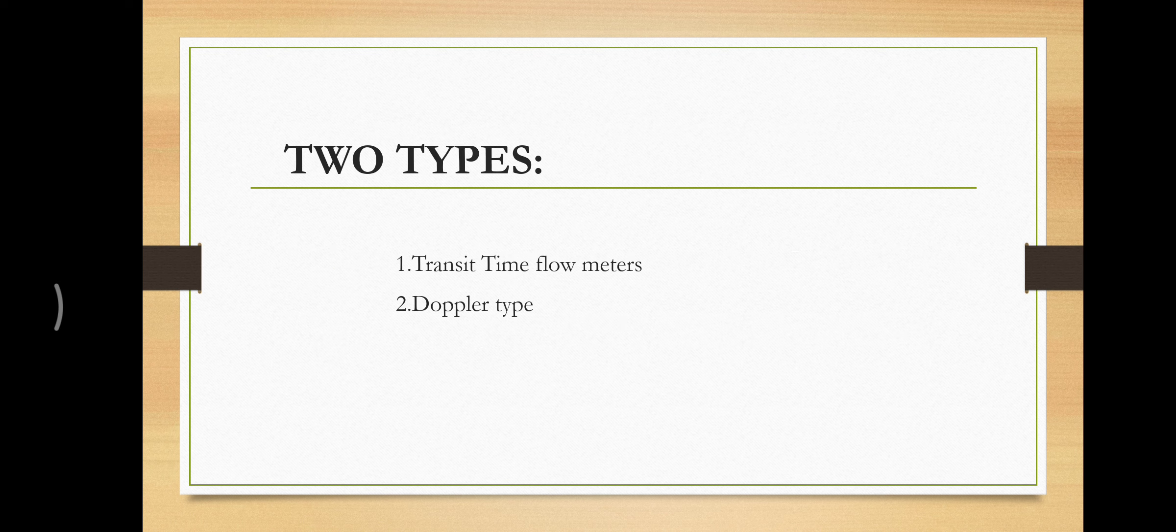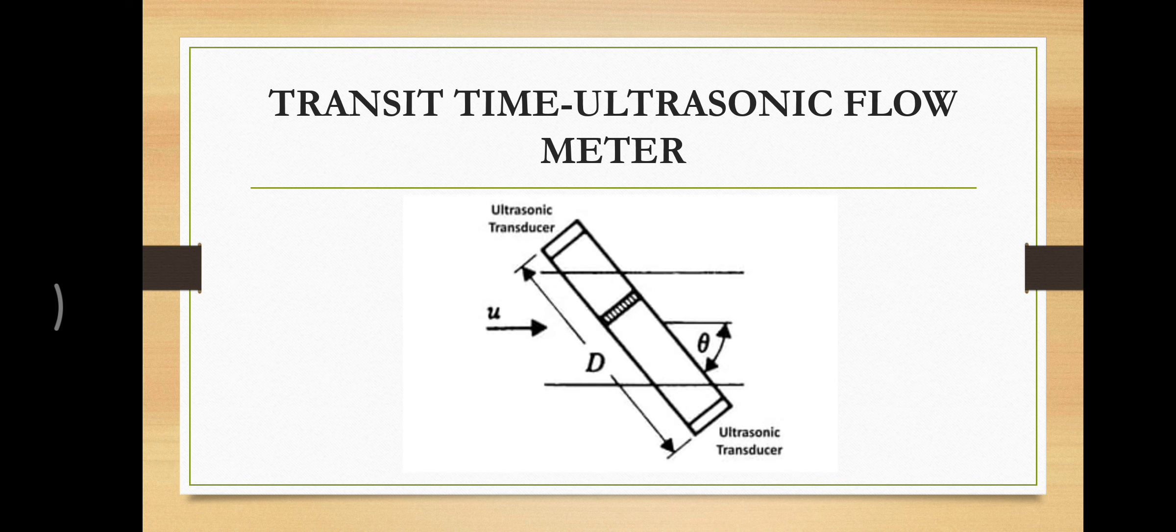It has two types: transit time flow meters and Doppler type. First of all, transit type ultrasonic meter. In a transit type, it consists of two ultrasonic transducers. The distance between the two ultrasonic transducers is capital D. The blood flowing in a direction is U, and the two transducers are placed at an angle theta.